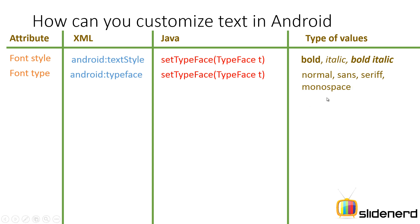If you want to use something like Arial, Verdana, or Lucida Console, you will have to load the TTF file — your font file — inside your assets folder and then load it using a method. We will talk about how to load a custom font inside your app in the next video. But for now, let's just stick to the default fonts that we have. And then we will talk about shadow.